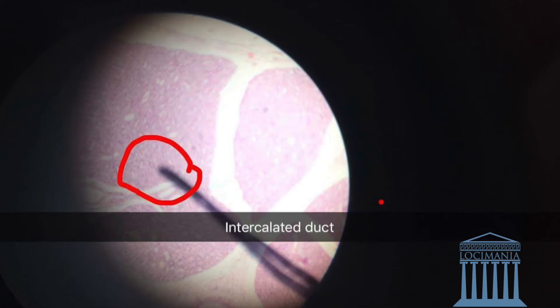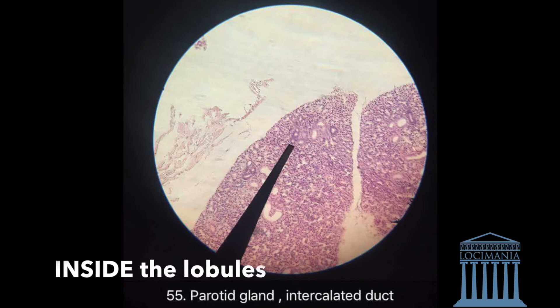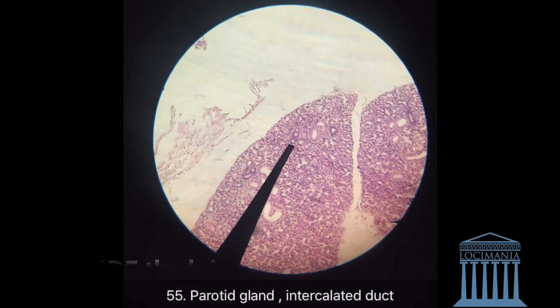Going on, we have the intercalated duct. They are small and pinkish and they're within the lobules. This is a very bad specimen, so I'm going to show you a better one. That is the intercalated ducts — as you can see they are intercalated and inside the lobules. They are small and pinkish.